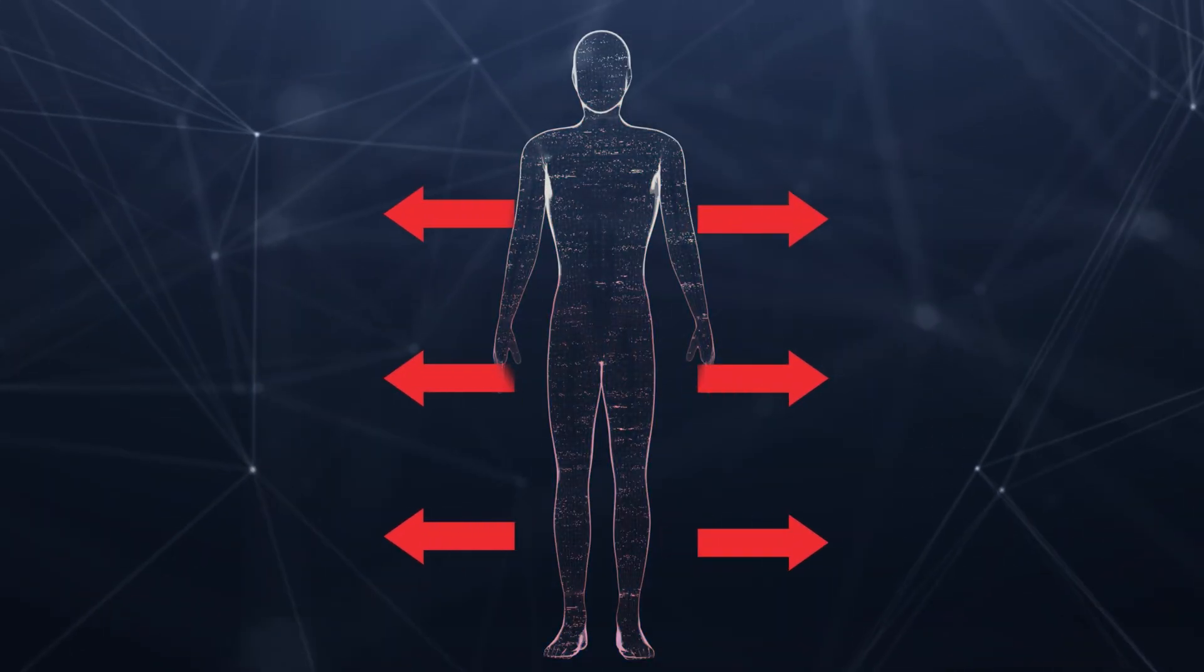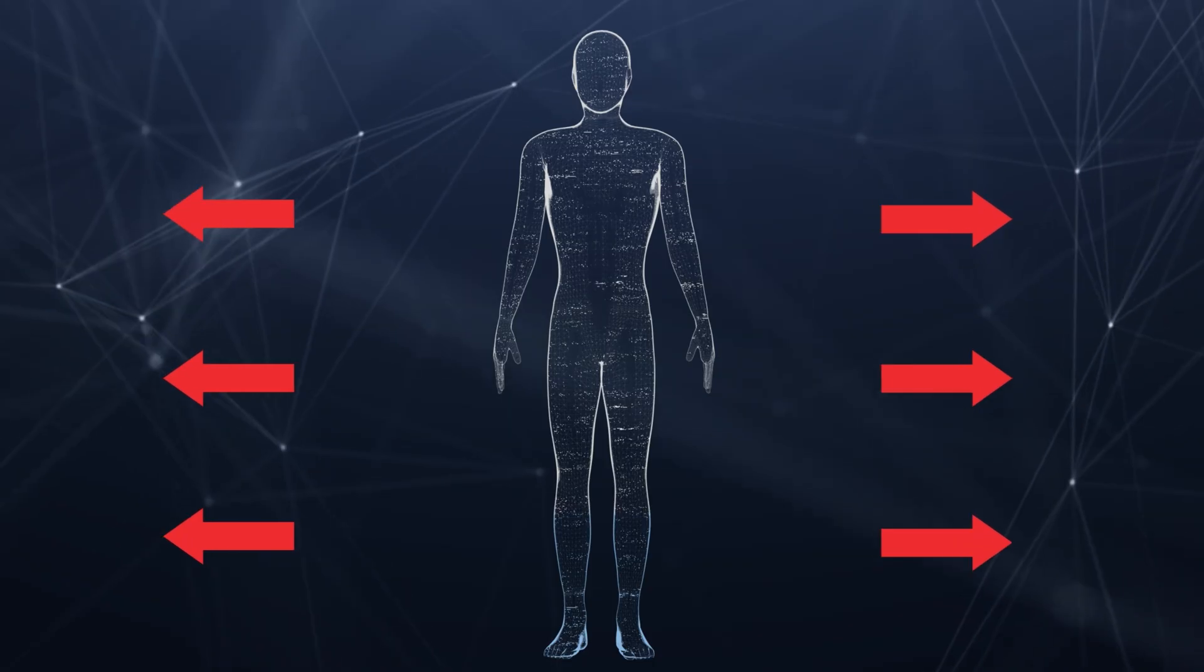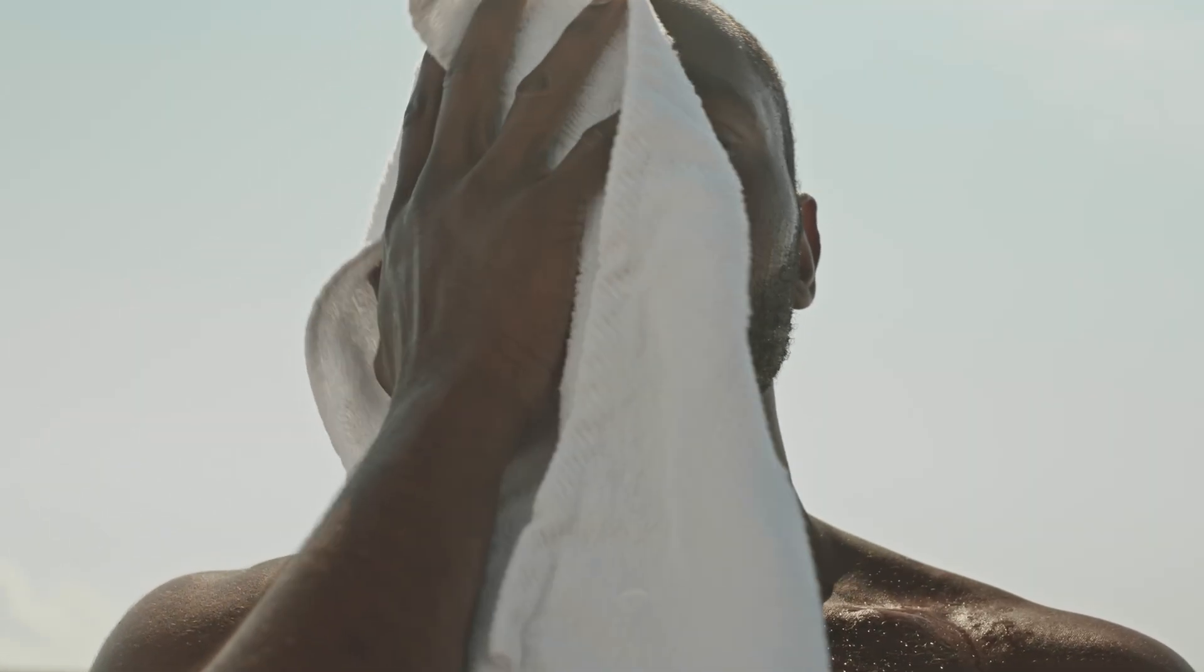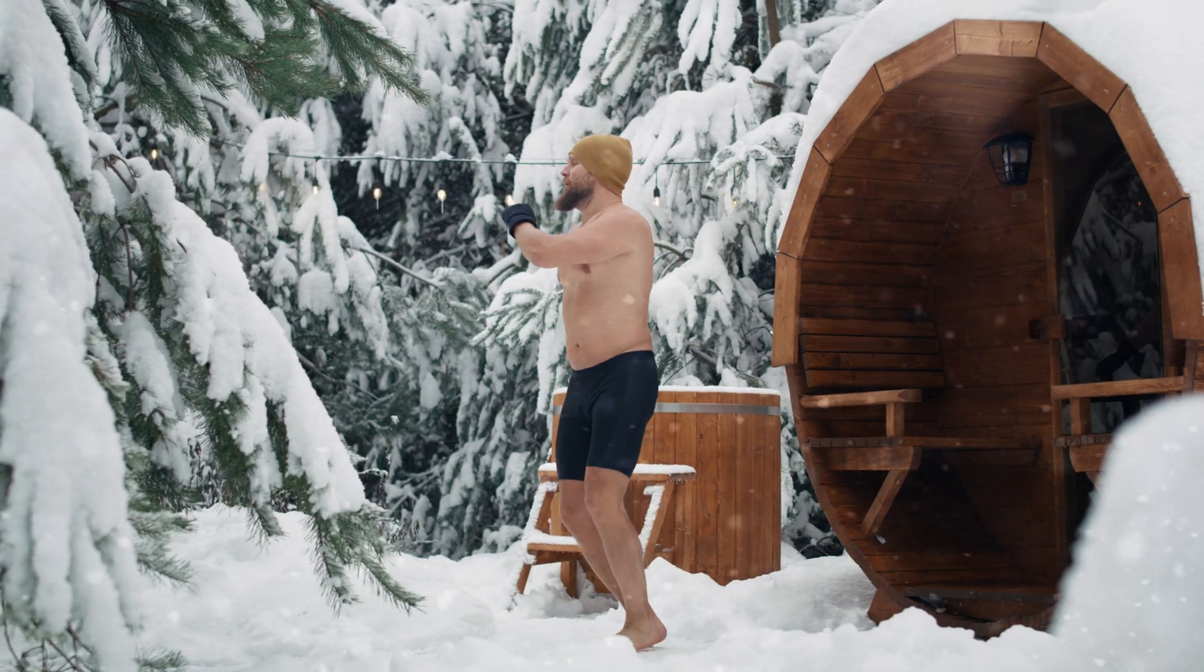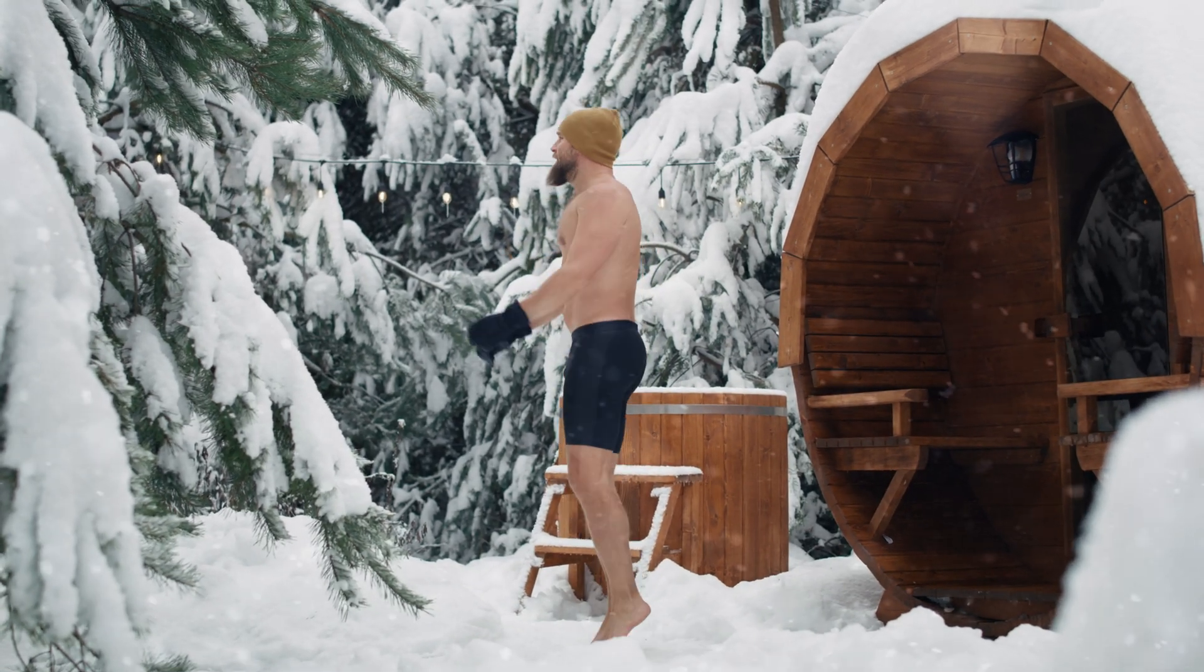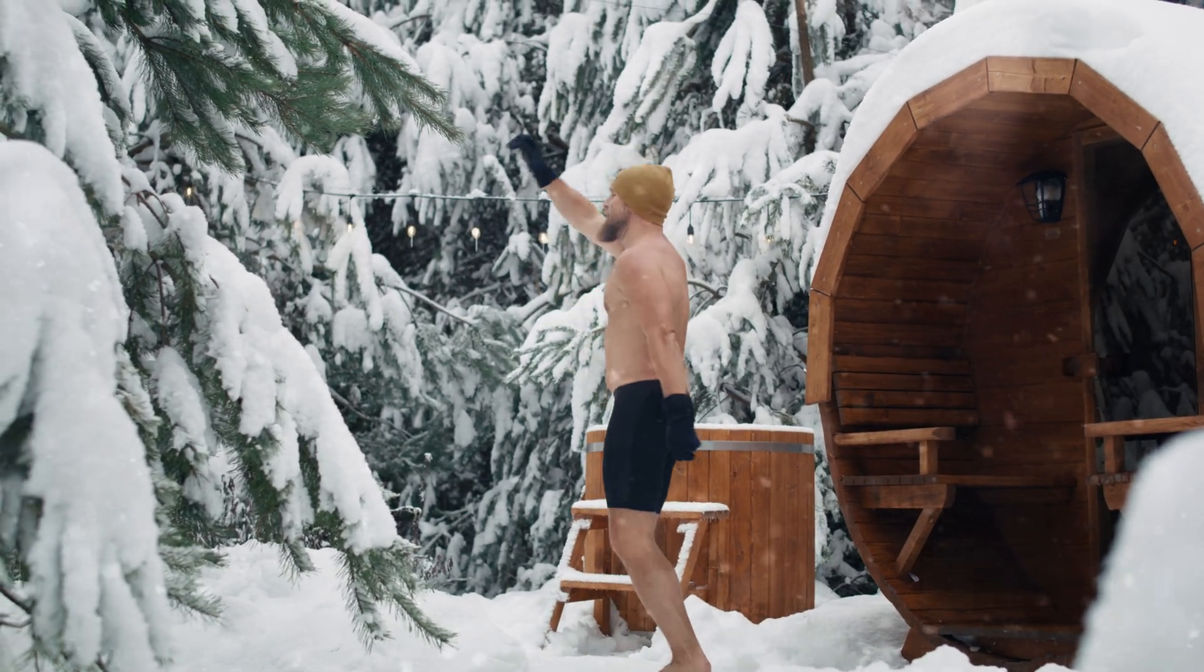This heat transfer occurs in only one direction, away from the person. Sweating is so effective that achieving the same cooling potential by convection requires standing outside naked in a two-mile-per-hour wind during the coldest day ever recorded in the United States.